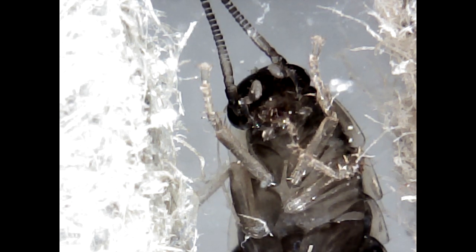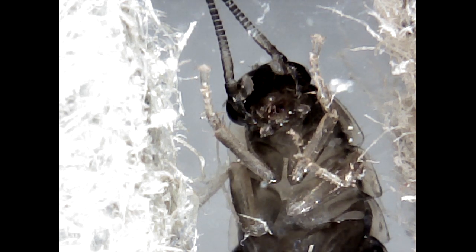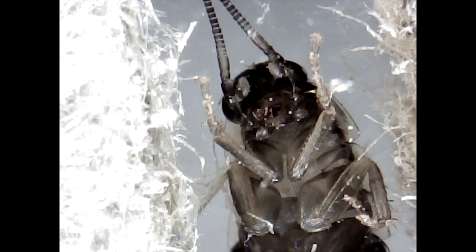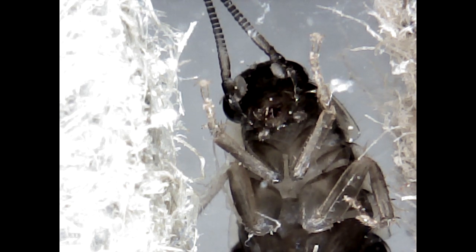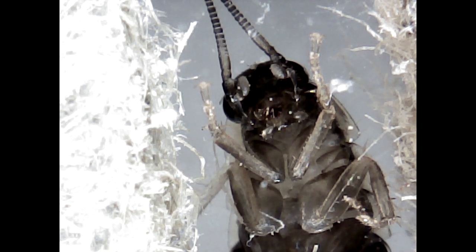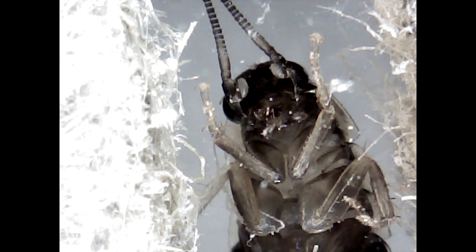The cockroaches are an ancient group, dating back at least as far as the Carboniferous period, some 320 million years ago. Those early ancestors, however, lacked the internal ovipositors of modern roaches.